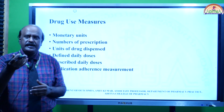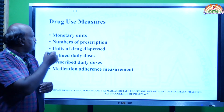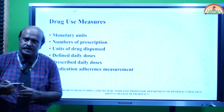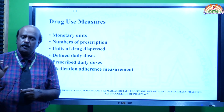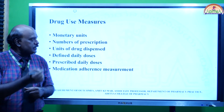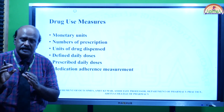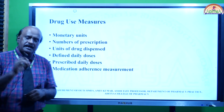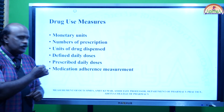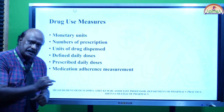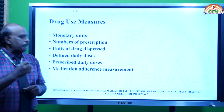The second category is drug use measures, which can be done in different ways: monetary units, number of prescriptions, units of drug dispensed, defined daily doses, prescribed daily doses, and medication adherence measurement.